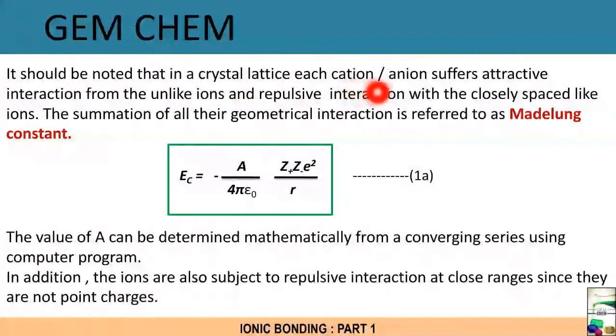It should be noted that in a crystal lattice, each cation and anion suffers attractive interaction from the unlike ions. If we see for a cation, if anions are present there is an attraction, but also repulsive interaction with the closely spaced like ions. If cations are placed and another cation is placed, then there is a repulsion. The summation of all their geometrical interaction is referred to as Madelung constant.